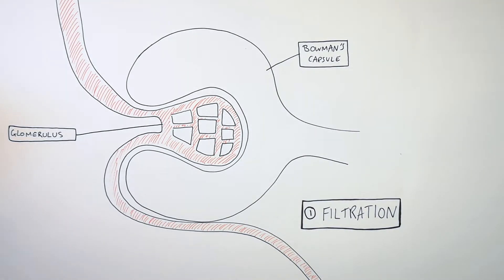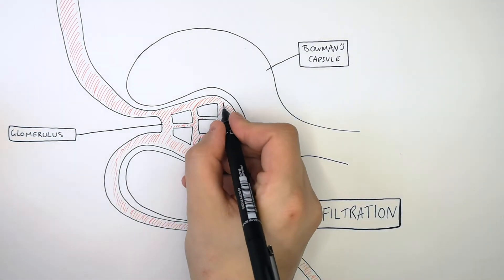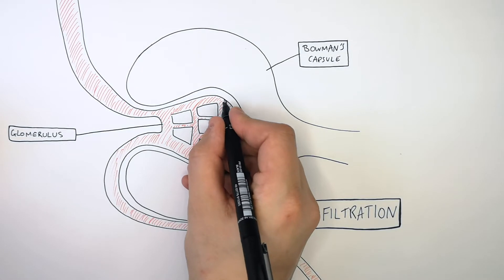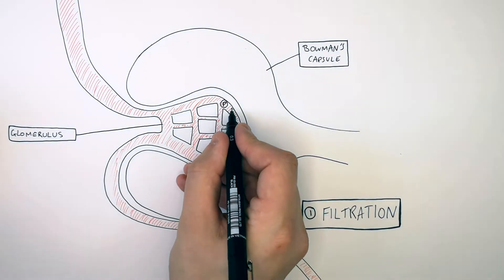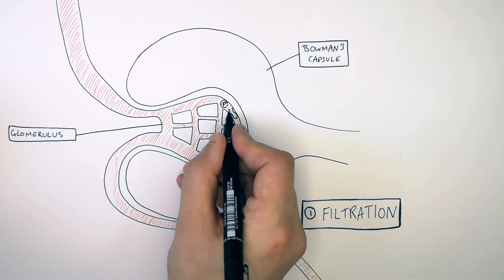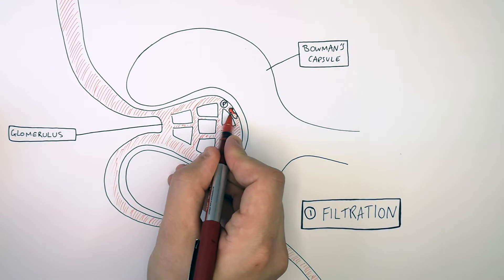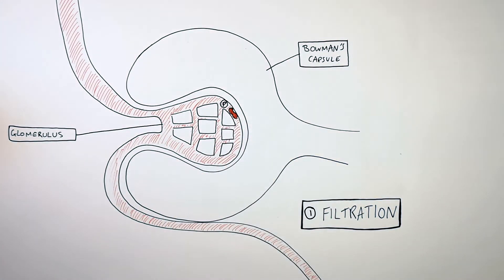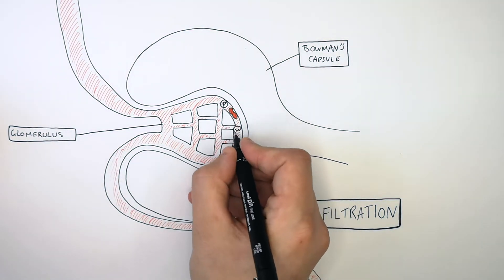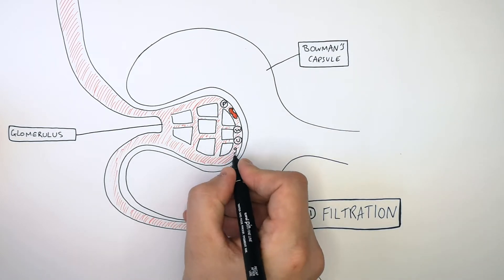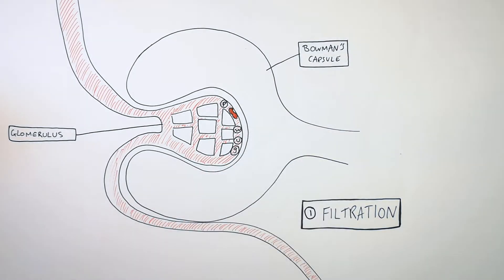Inside the blood you're going to find the following substances: proteins, red blood cells inside the glomerulus because it is a capillary, and you'll find smaller molecules of water, urea, and glucose inside the glomerulus.